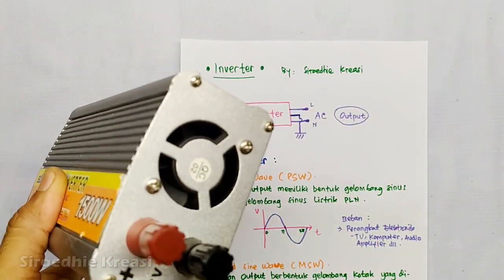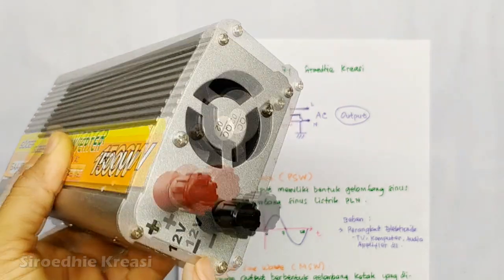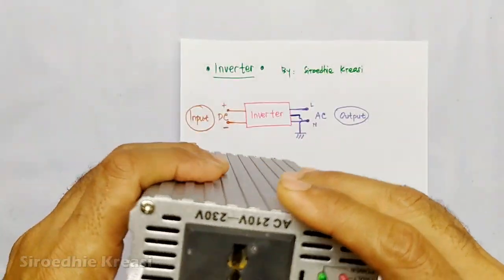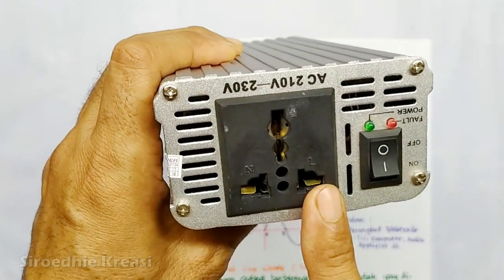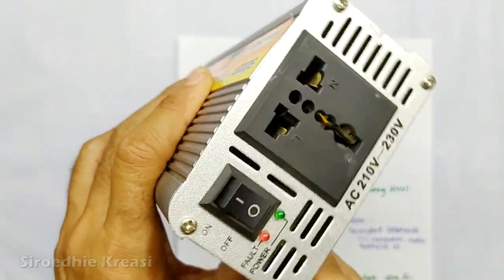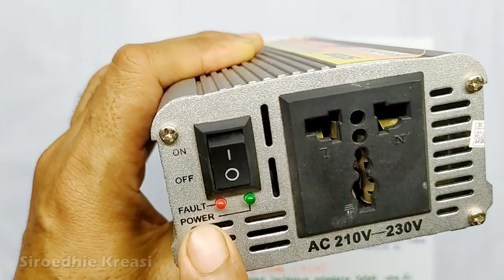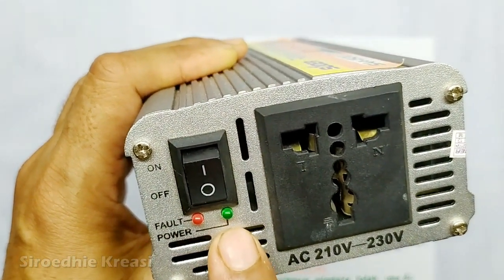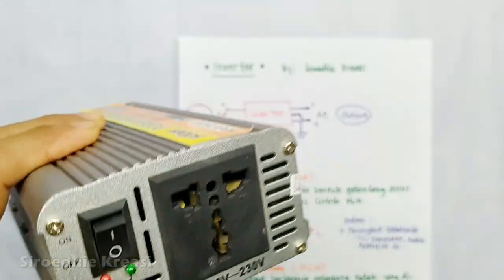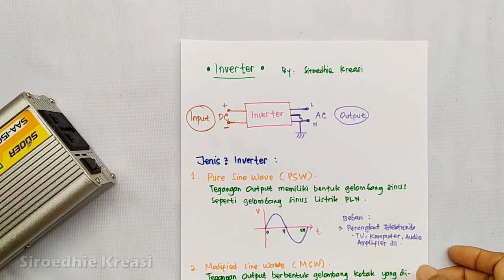Inputnya sebesar 12 volt, kemudian di sini adalah bagian output atau tegangan keluarannya. Dari sini ada fasa, netral, dan grounding. Kemudian di alat ini juga ada tombol on/off, di sini ada indikator berwarna merah untuk menyatakan gangguan, berwarna hijau menyatakan alat dalam keadaan ready.